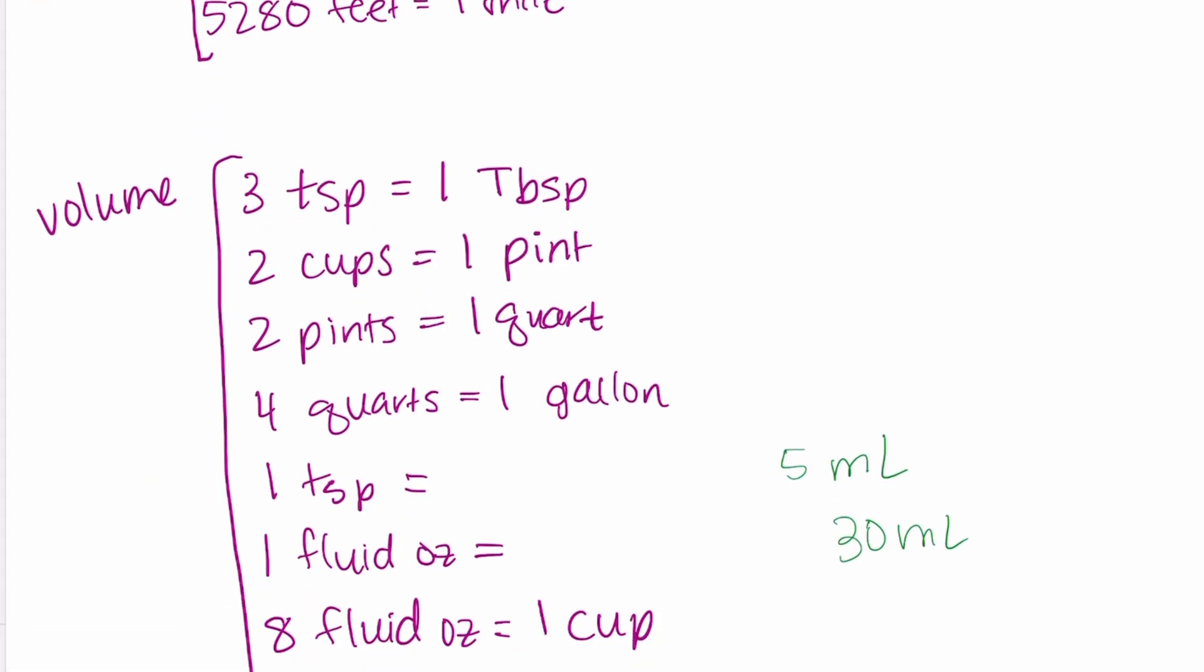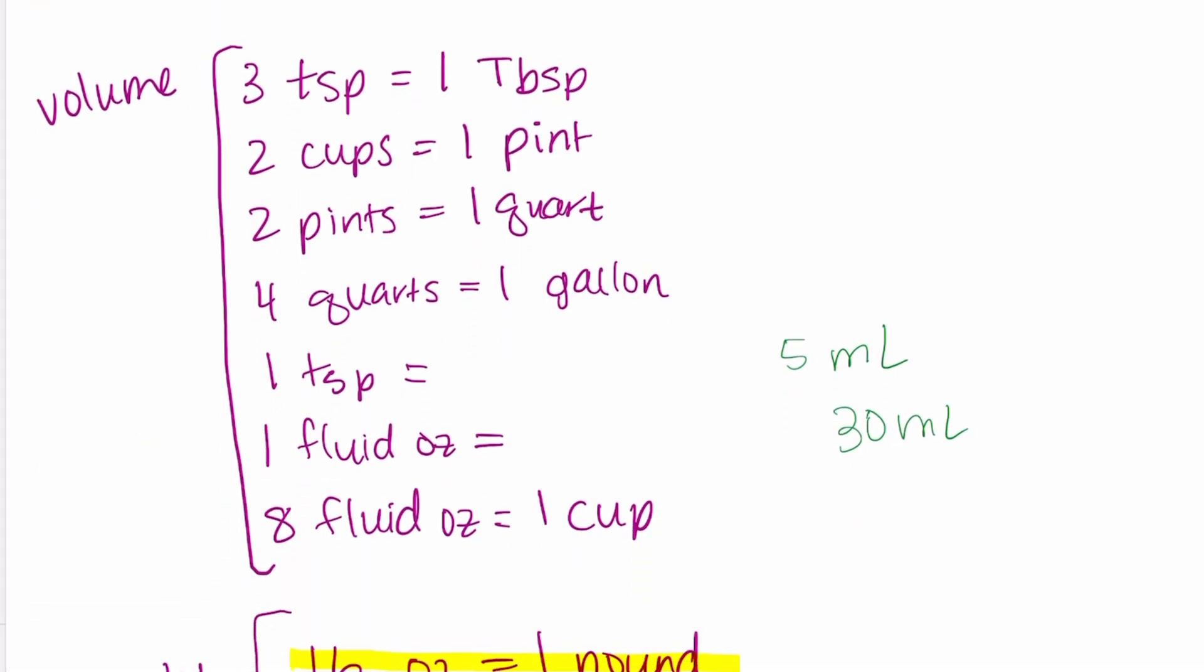Now moving on to volume. Most of these as you can see are converting within the standard system with the exception of a couple that are between standard and metric. So three teaspoons is equal to one tablespoon. Two cups is equal to one pint. Two pints is equal to one quart. Four quarts is equal to one gallon. Here is between standard to metric system. So one teaspoon is equal to five milliliters and one fluid ounce is equal to 30 milliliters.